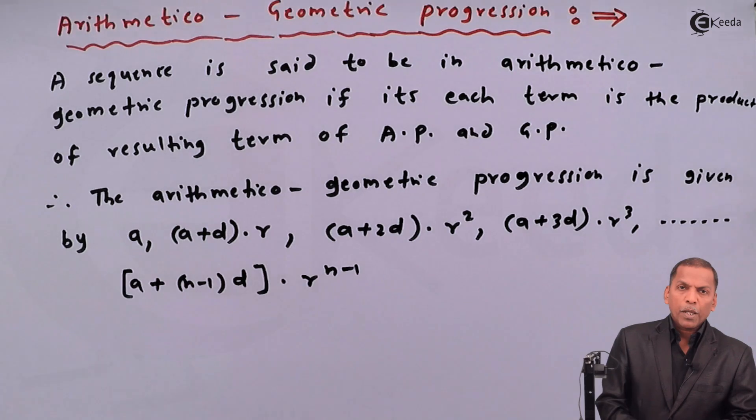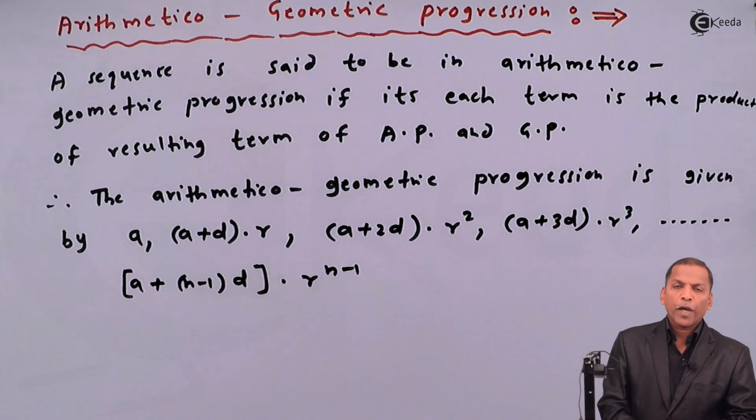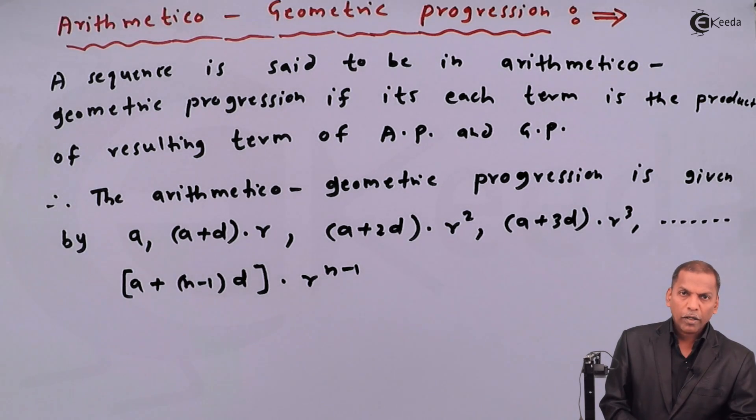So these all terms are the product of AP and GP, that is arithmetic progression and geometric progression. Thank you.